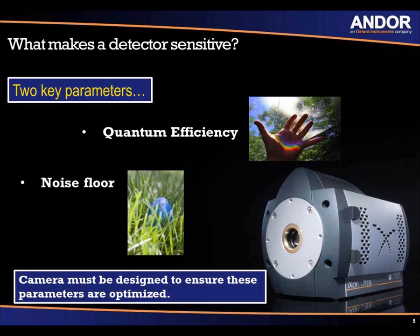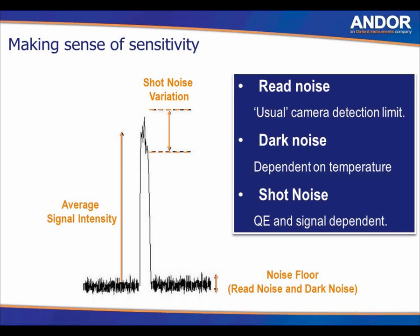It's very important when using your camera to ensure that cooling is on to remove dark noise. You can control dark noise by cooling your camera, and read noise by reading out slowly. Shot noise is QE and signal dependent and can't really be controlled — it's an effect of quantum efficiency and the signal itself. A line profile through an image shows the peak signal intensity and the noise floor, illustrating an ideal situation of high sensitivity and very low noise.